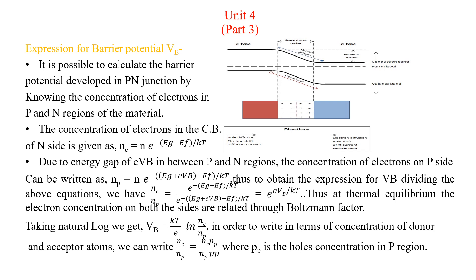Taking the natural log of both sides, since ln(e) = 1, we get Vb = (kT/e) · ln(nc/np). This is in terms of the concentration of electrons on the n side and on the p side. Since it is not practical to know the electron concentration directly, we can write this in terms of doping concentration — that is, concentration of donor atoms and concentration of acceptor atoms — by multiplying and dividing by pp, the concentration of holes of the p region.